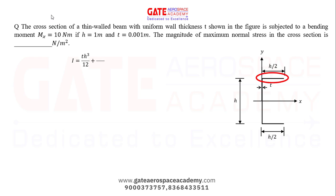For the flange section, it will be ht³/12, but it is away from the centroid, so we have to use the parallel axis theorem. That adds area times square of the distance from the centroid. For this flange section we write: ht³/12 plus area (h/2 × t) times (h/2)².